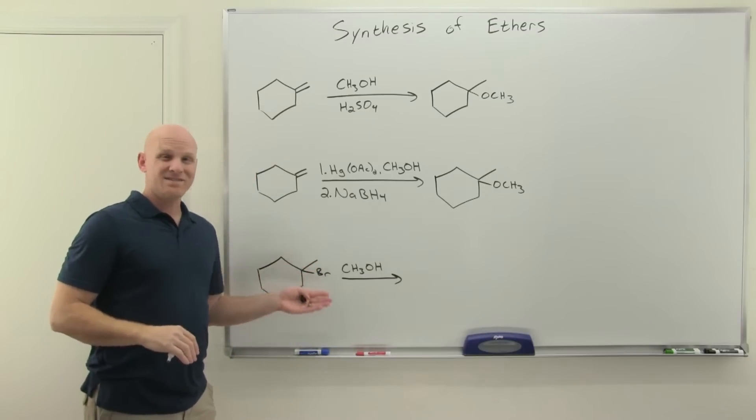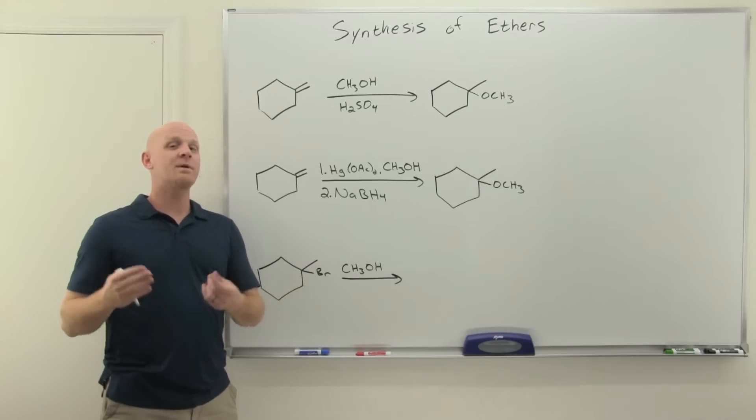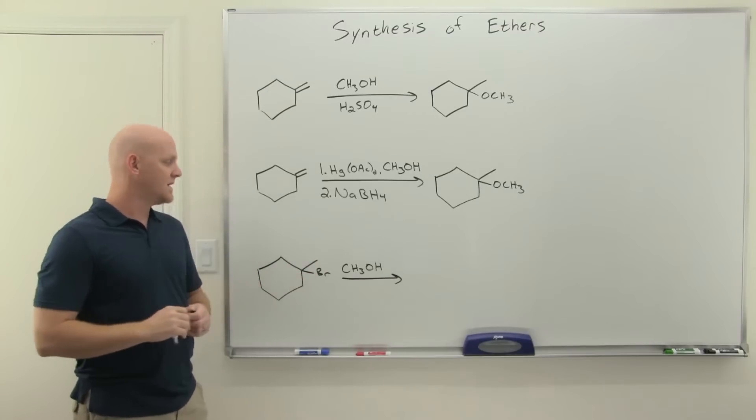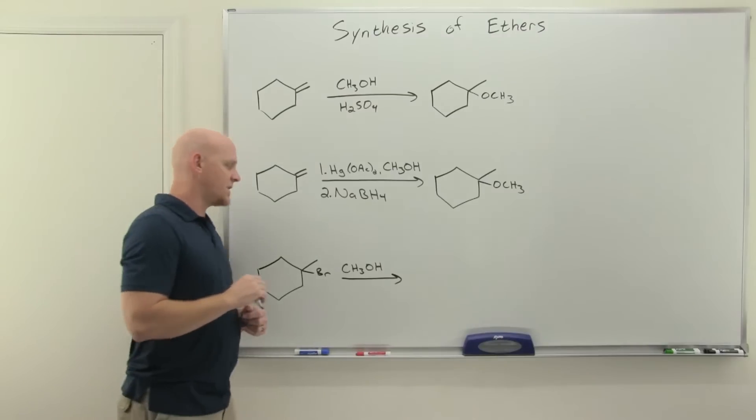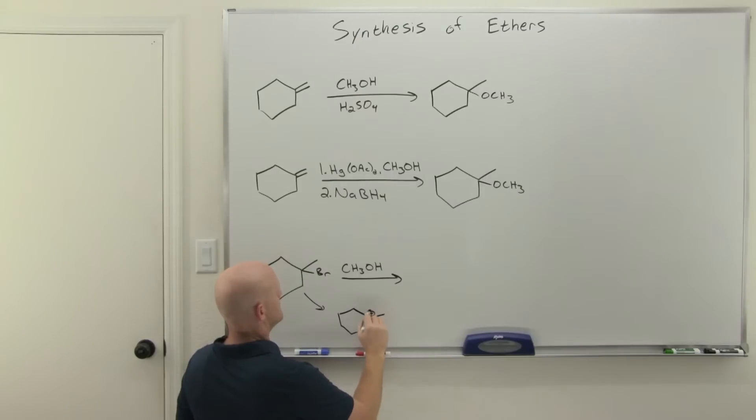Technically, you can also form them via SN1, although this is my least favorite way, because if you're doing SN1, good chance you're going to have a fair amount of E1 competing with it, so it's not the easiest reaction to get a great yield of. But one that's presented in quite a few textbooks, and in this case, your leaving group is going to leave, you're going to form a carbocation. Again, we're doing SN1.